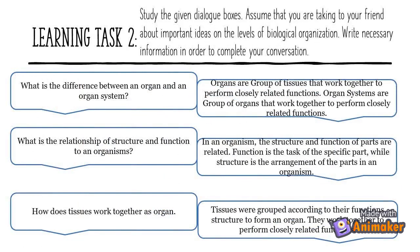Learning Task 2: Study the given dialogue boxes. Assume that you are talking to your friend about important ideas on the levels of biological organization. Write the necessary information to complete your conversation. Number 1: What is the difference between an organ and an organ system? Answer: Organs are groups of tissues that work together to perform closely related functions. Organ systems are groups of organs that work together to perform closely related functions.